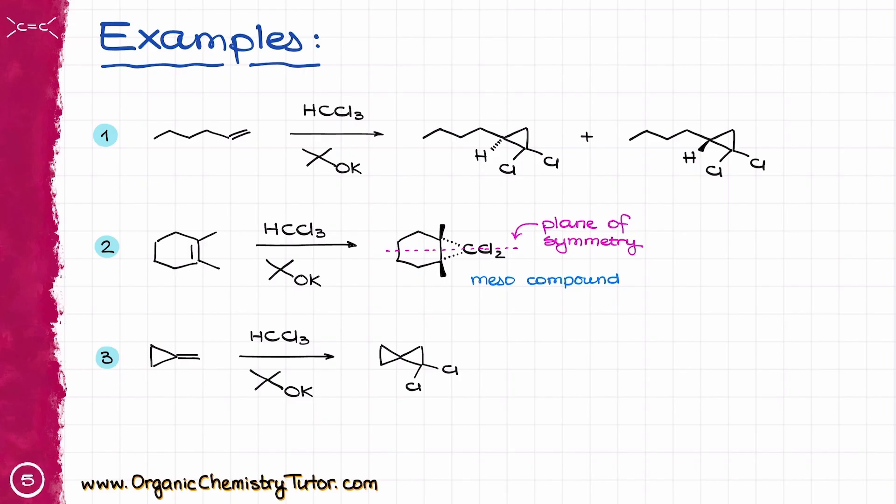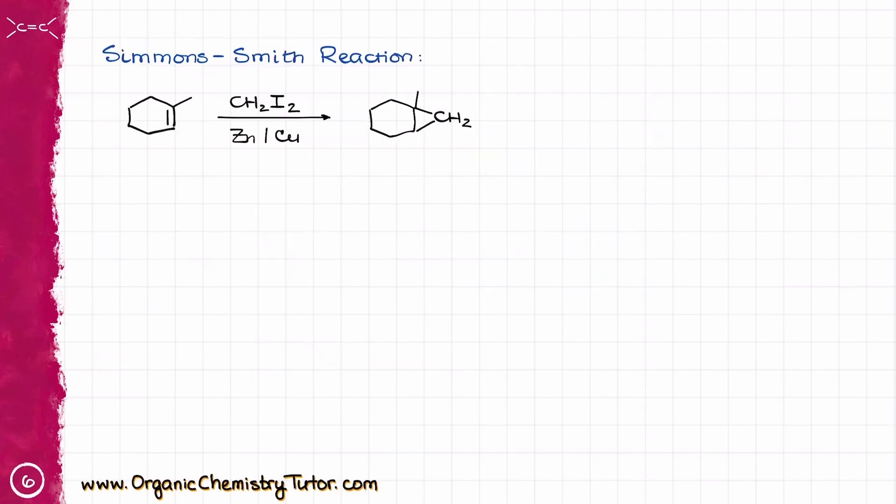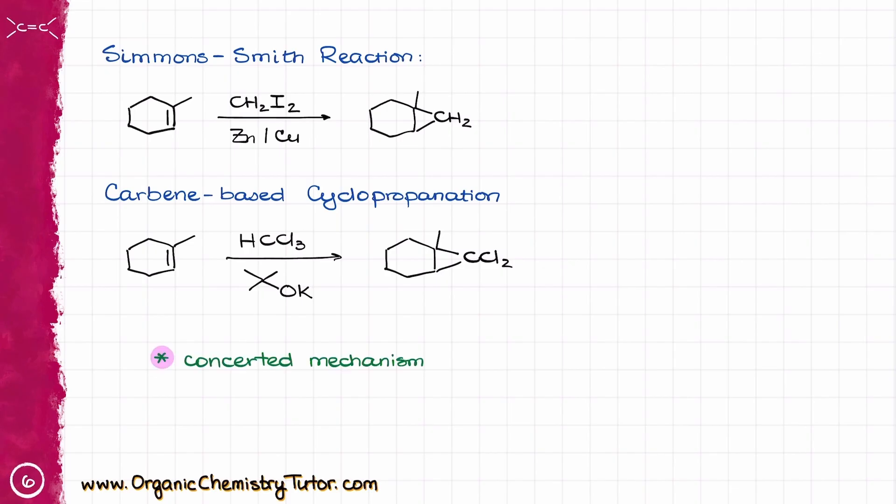So, as a quick recap, the Simmons-Smith reaction uses zinc and diiodomethane to make simple cyclopropane ring from alkenes via zinc-containing carbenoid species, while a regular cyclopropanation makes three-membered rings via carbene intermediate and results in a cyclopropane with two geminal chlorine atoms on it. Both reactions have a concerted mechanism when it comes to the addition to the alkene, and both reactions are stereospecific, giving you syn addition products.